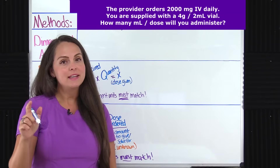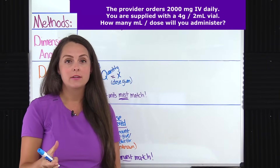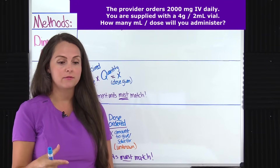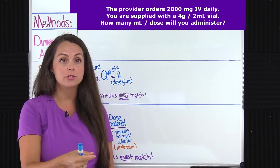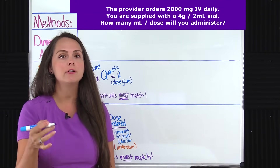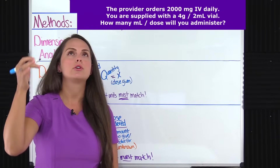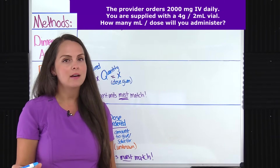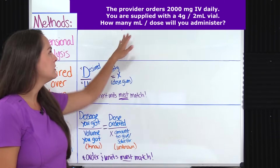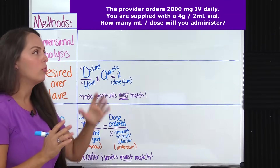However, the problem is that you have this vial of that medication that says for every two mls of solution that you're withdrawing into your syringe, you're giving four grams, but the patient's ordered 2000 milligrams. So you've got to do some math to actually figure out how many milliliters per dose you're going to give. That is our whole goal.